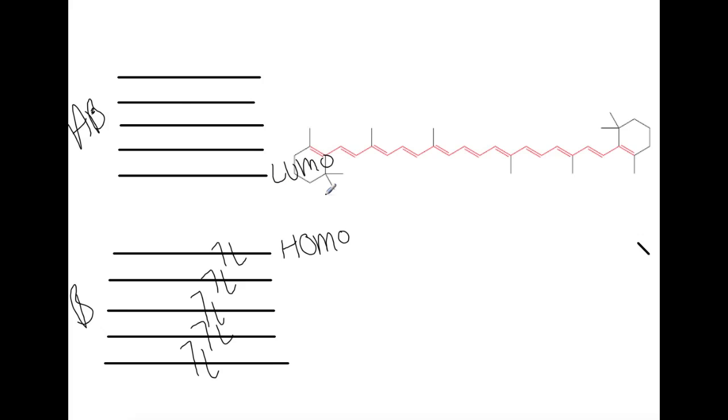One of the other requirements of a molecule which is organic to have color is to have a series of alternating single and double bonds known as a conjugated system. This can also be achieved by having multiple benzene rings bonded together as well. We'll come on to benzene later on in the course.